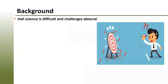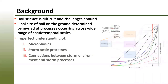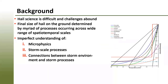Hail science is difficult and there are a lot of challenges. The size of hail on the ground is determined by a myriad of processes occurring across a wide range of spatial and temporal scales — everything from the microphysics to the dynamical scale and even synoptic scale. It's complicated by the fact that we don't have a complete understanding of the microphysics involved in hail growth, the storm-scale processes at work, and the connections between the storm-scale environment and these storm processes.